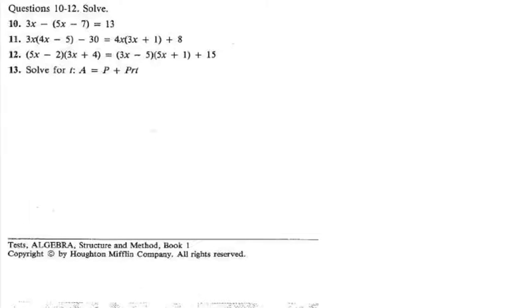We're looking at the third section where we're being asked to solve. The reason why we couldn't solve any of the problems before on Chapter 4 Test Form A is because we didn't have any equal signs. Here, we have the equal signs, so we can actually find the value of x. I'm going to rewrite Problem 10 really quickly. We have 3x minus the quantity 5x minus 7 is equal to 13.